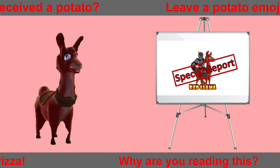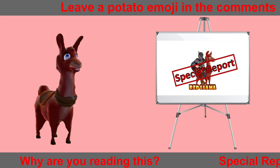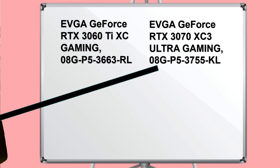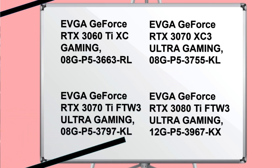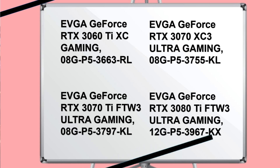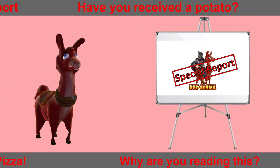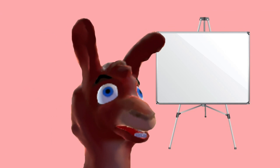In order to tell the difference, you have to look at the last two letters on the graphics card. RL, KL, and KX — these are all LHR cards, especially the 3070Ti and the 3080Ti. Any version, any letter that it ends with is a low hash rate card. Try not to be confused!